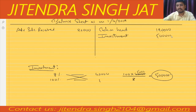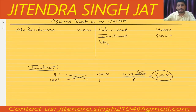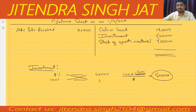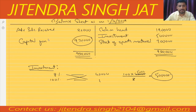Opening stock of sports material is also given as 3 lakh. Total assets come to 9,90,000. After subtracting the liability of 20,000, we get 9,70,000 remaining on the liability side. This is our capital fund of 9,70,000.